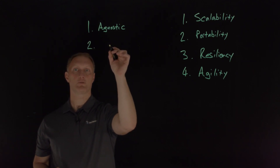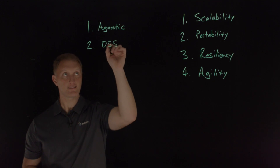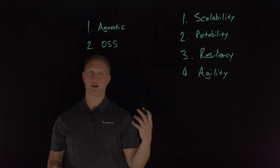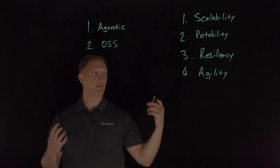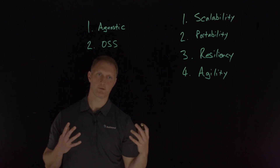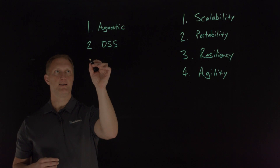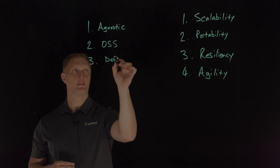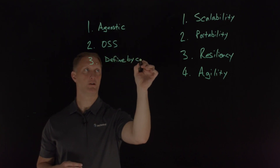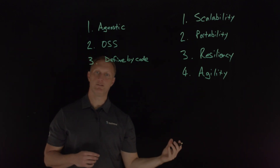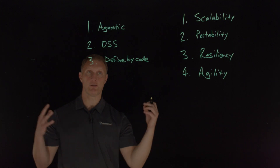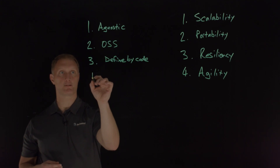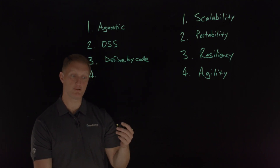The second principle is to prioritize open source software. Modern app teams need to be able to look under the hood of the code — they need to be able to design portability, scalability, and all these pillars — so use open source whenever you possibly can. The third principle is to define everything possible by code. Modern applications have to be able to move at faster than human speed, so automation and programmatic definition — everything needs to be defined by code wherever possible.